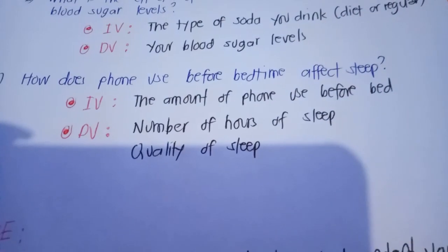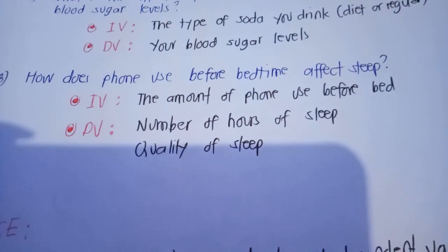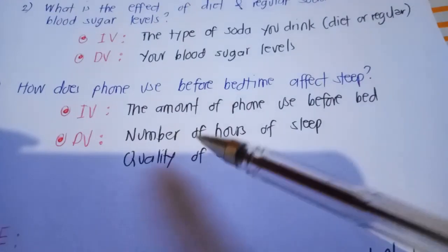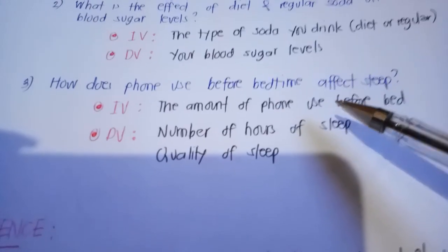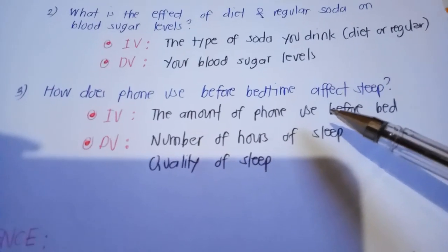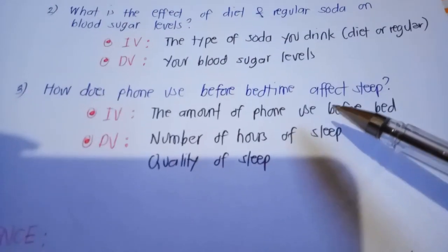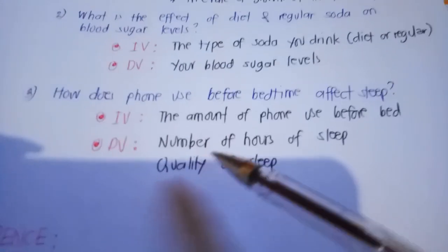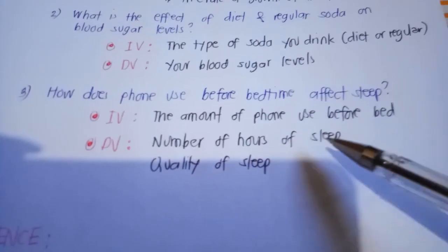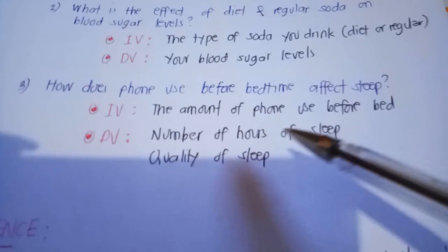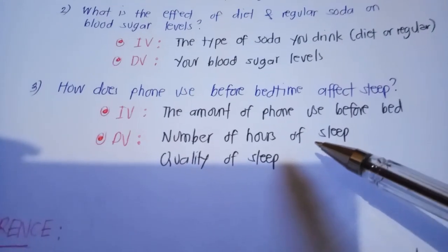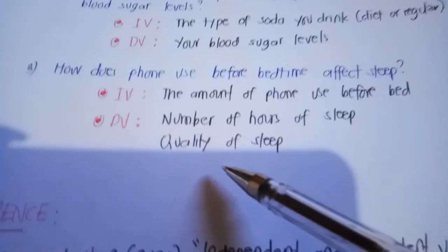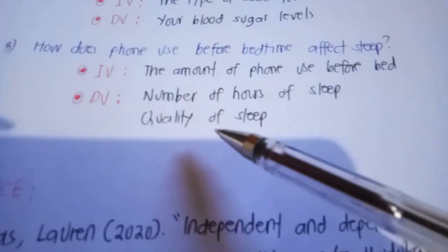And finally: how does phone use before bedtime affect sleep? Our independent variable is the amount of phone use before bed — how long you use your mobile device before going to bed. Your dependent variable refers to the number of hours of sleep and the quality of sleep. If you use your phone longer before bed, you may have fewer hours of sleep.